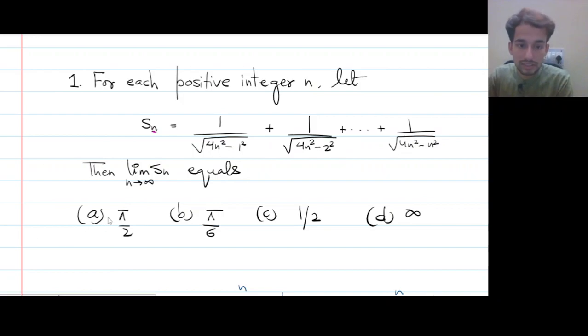Our first option says that the limit of this sequence as n approaches infinity is π/2. In option b, it's π/6. In option c, it's 1/2. And finally, in option d, it is infinite.